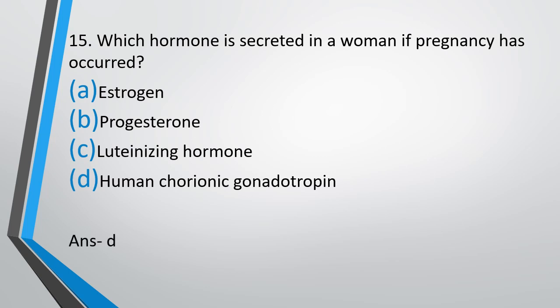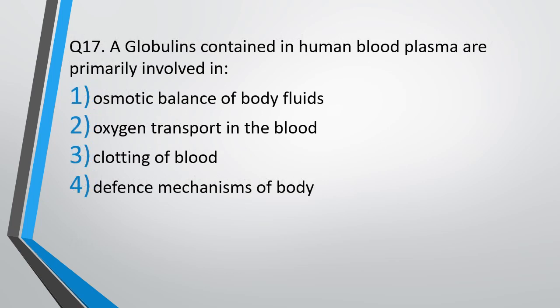Question number 17. Globulins contained in human blood plasma are primarily involved in osmotic balance of body fluids, oxygen transport in blood, clotting of blood, or defense mechanism of body. What is the function of globulins found in human blood plasma? The correct answer is option 4, that is defense mechanism of body.